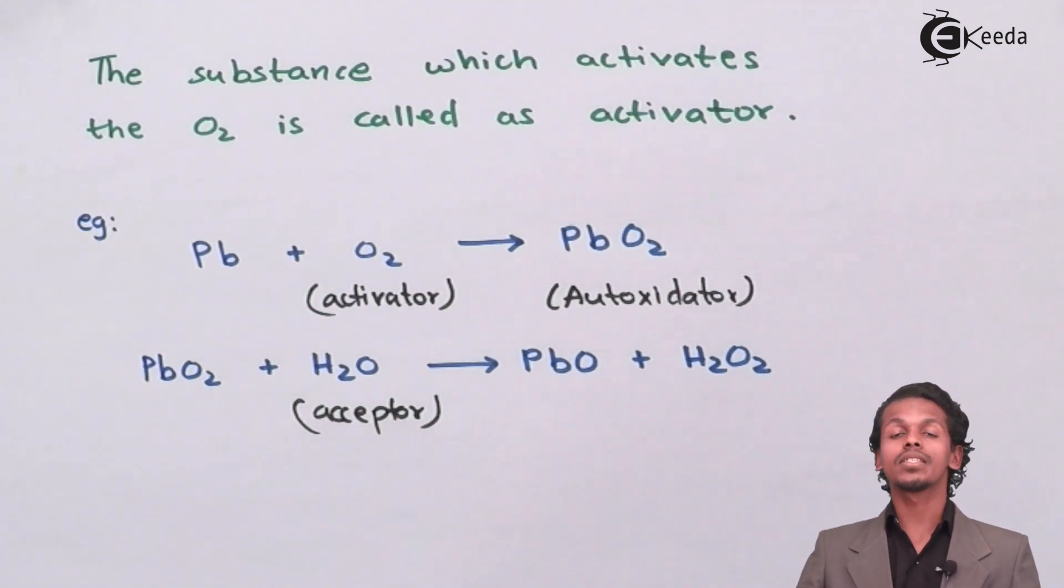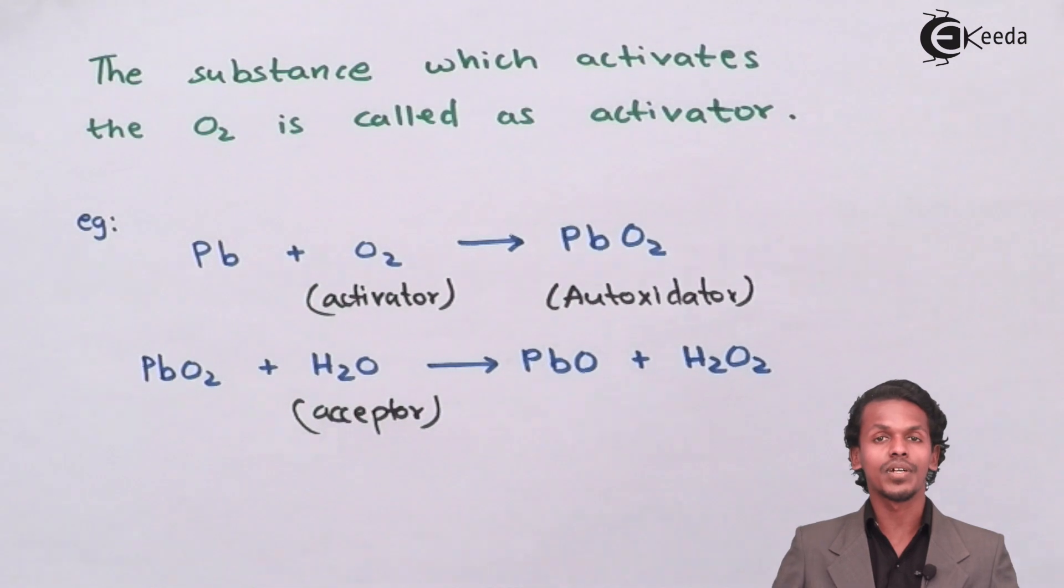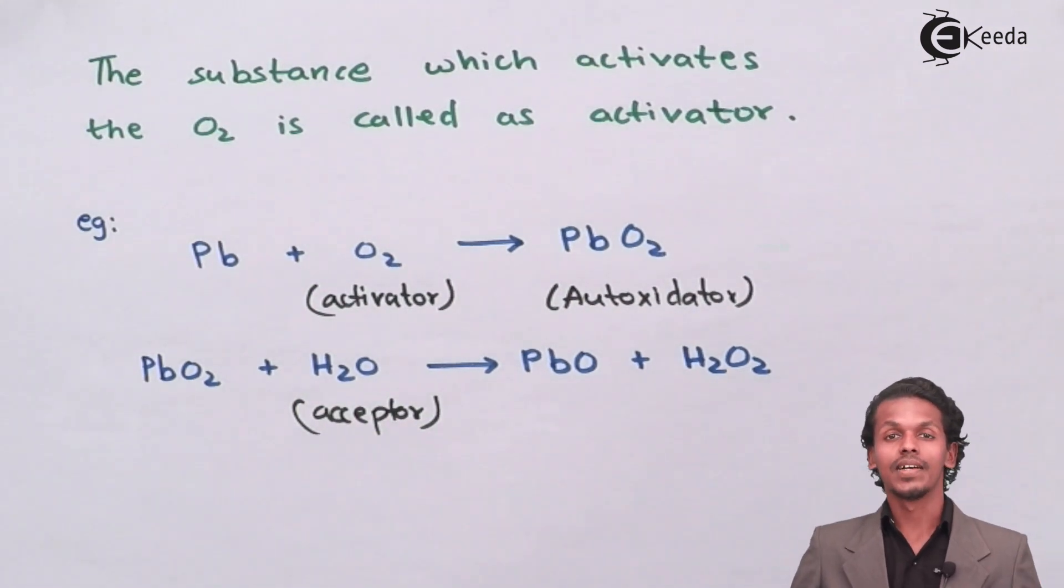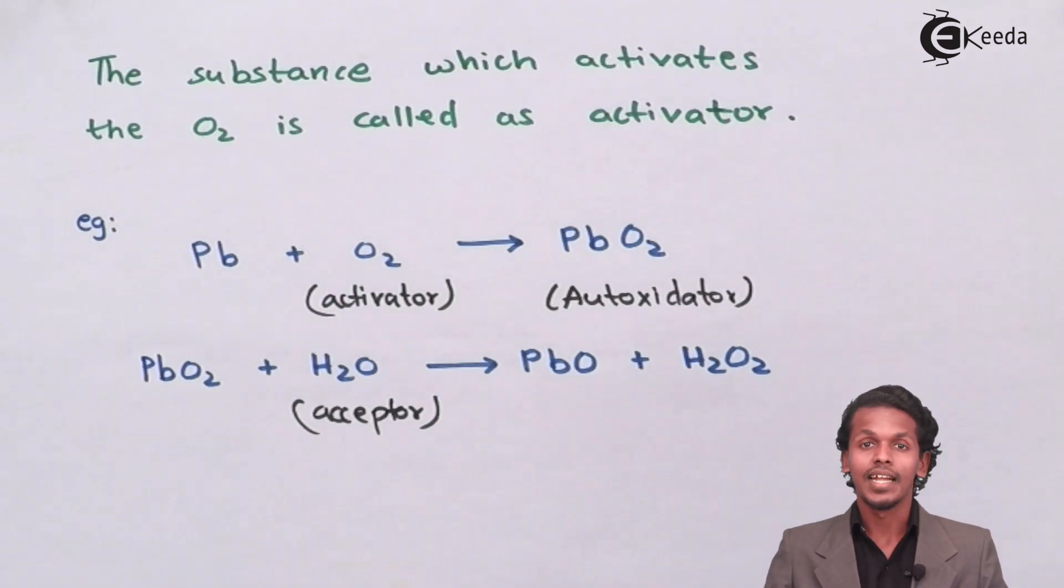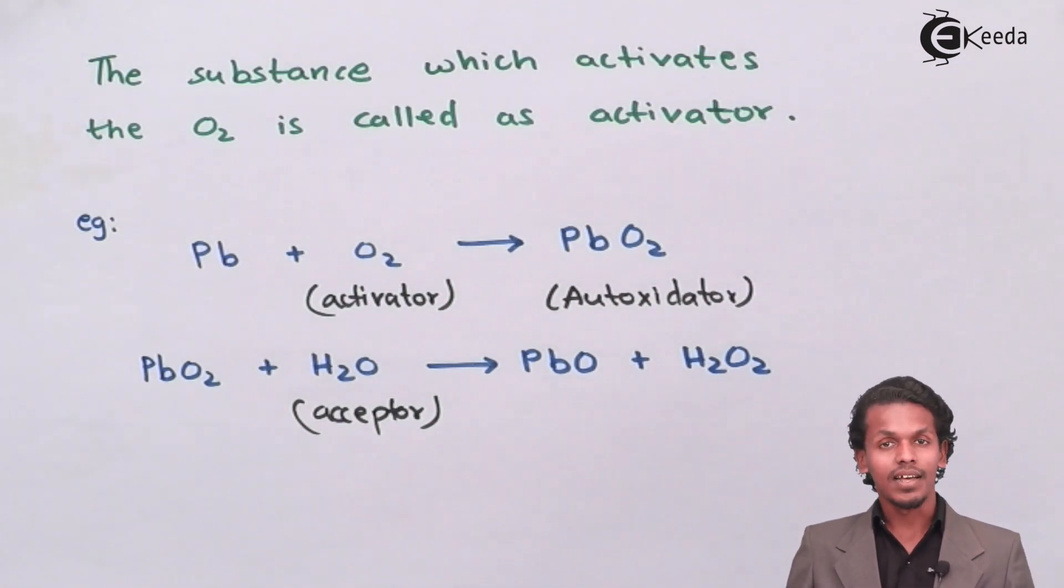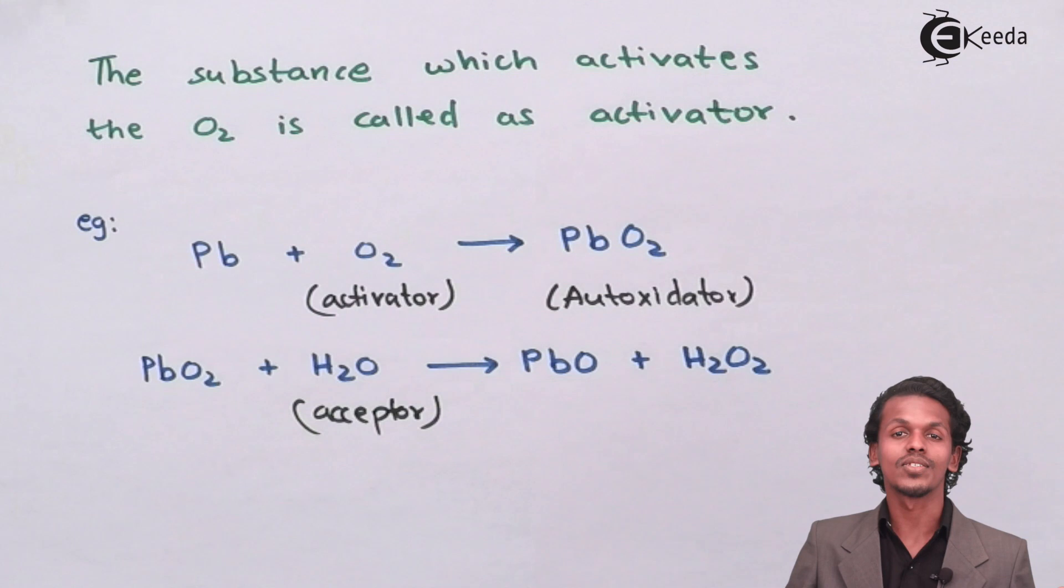So this only happens with unsaturated atoms or unsaturated molecules if I would consider for alkene, alkyne, Pb and tin. So this kind of metals and this kind of alkenes are showing this kind of process known as autoxidation.